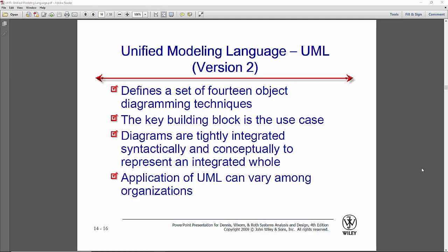There are basically 14 object-oriented diagrams in UML, although we're only going to use predominantly 5, 6, or 7 of them. The primary, the initial, the most important diagram is the use case.